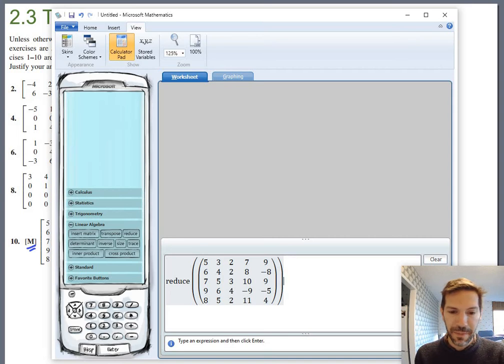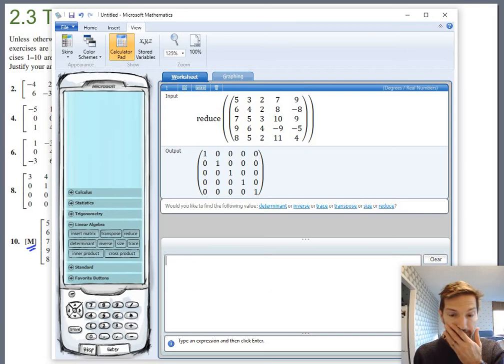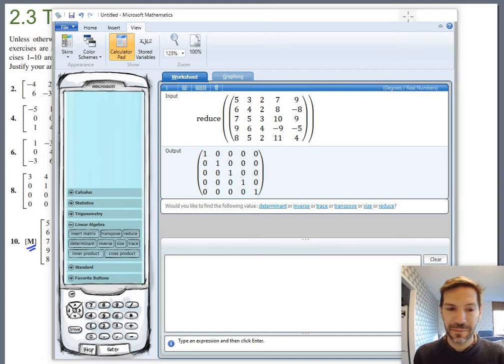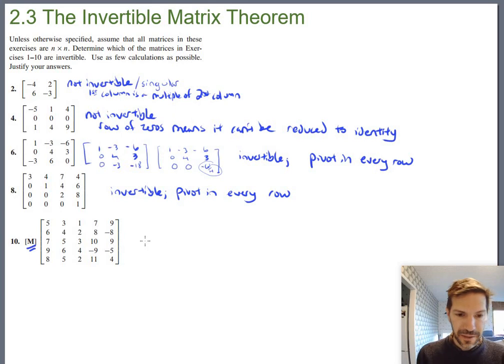Thankfully, I have already done that. So go ahead and slap that big puppy into your favorite matrix calculator, and go ahead and reduce. And it does reduce to the identity, which is another way of saying there's a pivot in every row. So that matches two of our statements from the invertible matrix theorem already. So you could say this is invertible, reduces to the identity, the five-by-five identity, or has a pivot in every row. So it should be invertible.